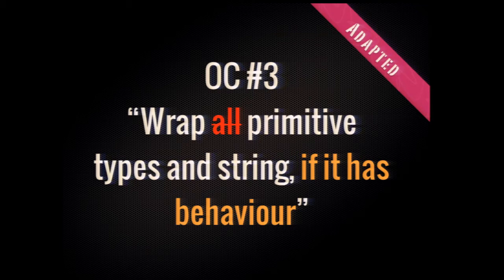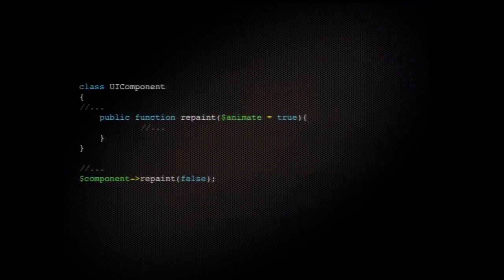Rule three — this is where we had to adapt because Java and PHP are different. The original rule said everything should be an object: integers, strings, everything. That's great for Java and not so great for PHP. The idea is you should only really wrap your primitives if you need to attach behavior to them — then it's a good idea. Let me give you an example: we have a UI component with a repaint function.